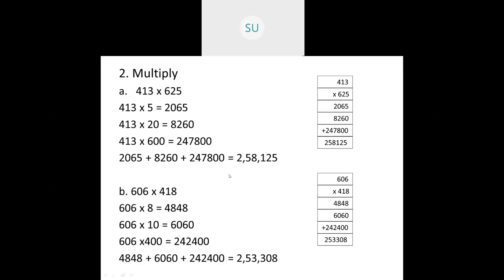Question 2B: 606 into 418. First multiply 606 by 8 in the ones place to get 4,848. Then 606 into 10 gives 6,060. Then 606 into 400 gives 2,42,400. Adding 4,848 plus 6,060 plus 2,42,400 gives 2,53,308.